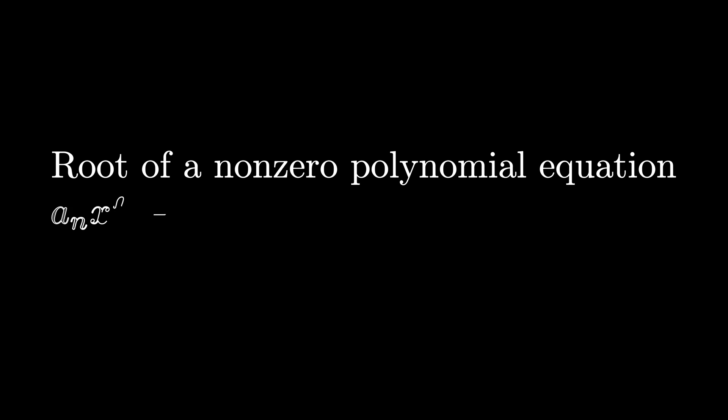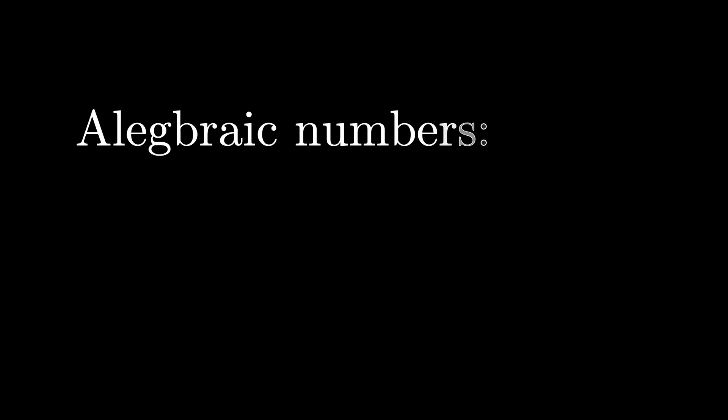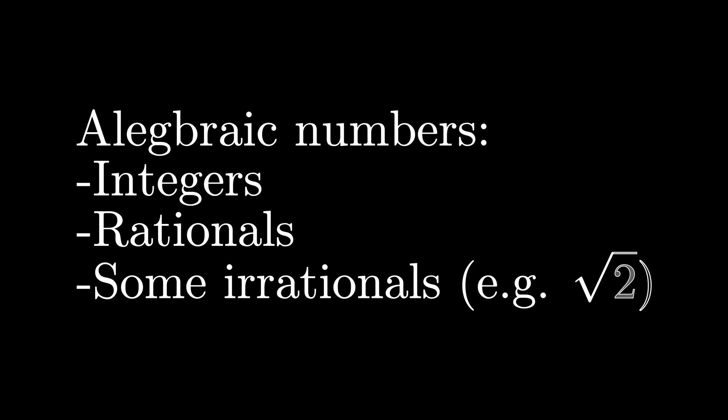First, what are algebraic numbers? A number is algebraic if it is a root, or zero, of a nonzero polynomial equation with rational coefficients. So integers and rationals are all algebraic, as are some irrationals like root 2, which is the root of the polynomial x squared minus 2 equals 0.